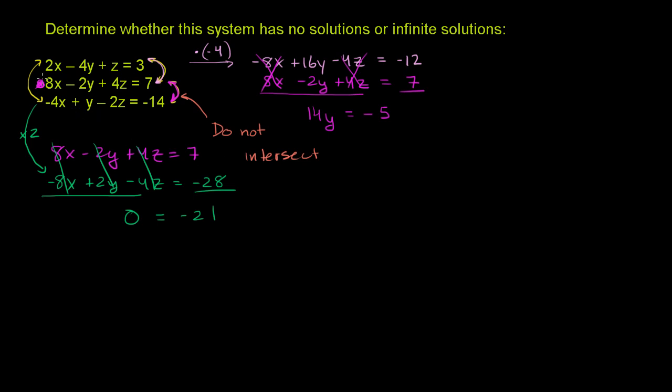And since these last two definitely do not intersect, we can say that this system has no solutions. It doesn't matter if this first equation intersects one or both of these. The fact that these two don't intersect tells us that there's no unique point, x, y, z coordinate, a point in three dimensions that satisfies all three of them.